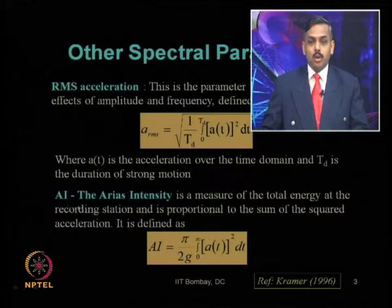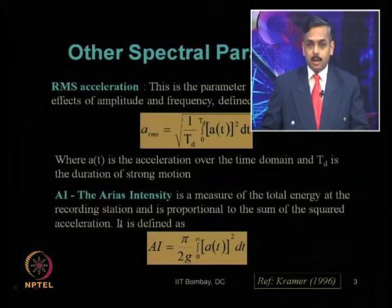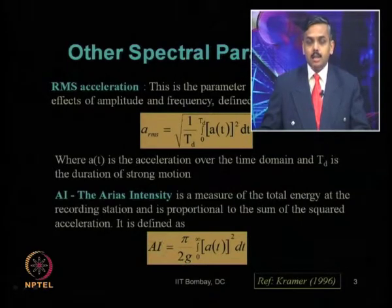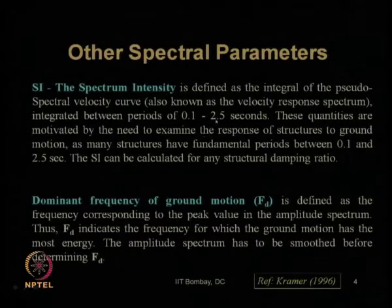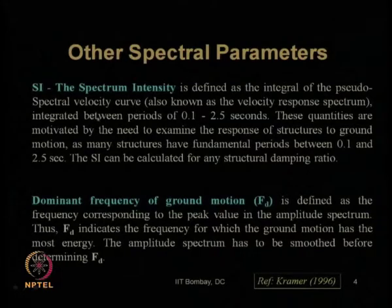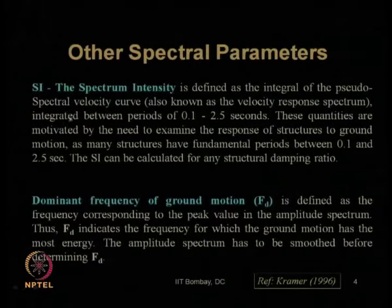We have seen what is called Arias intensity — it is the measure of the total energy released during an earthquake at a recording station, and how it can be estimated. Then we discussed spectrum intensity, defined as the integral of the pseudo spectral velocity curve. We derived the pseudo spectral velocity, pseudo acceleration curve, and pseudo displacement curve in the previous lecture.